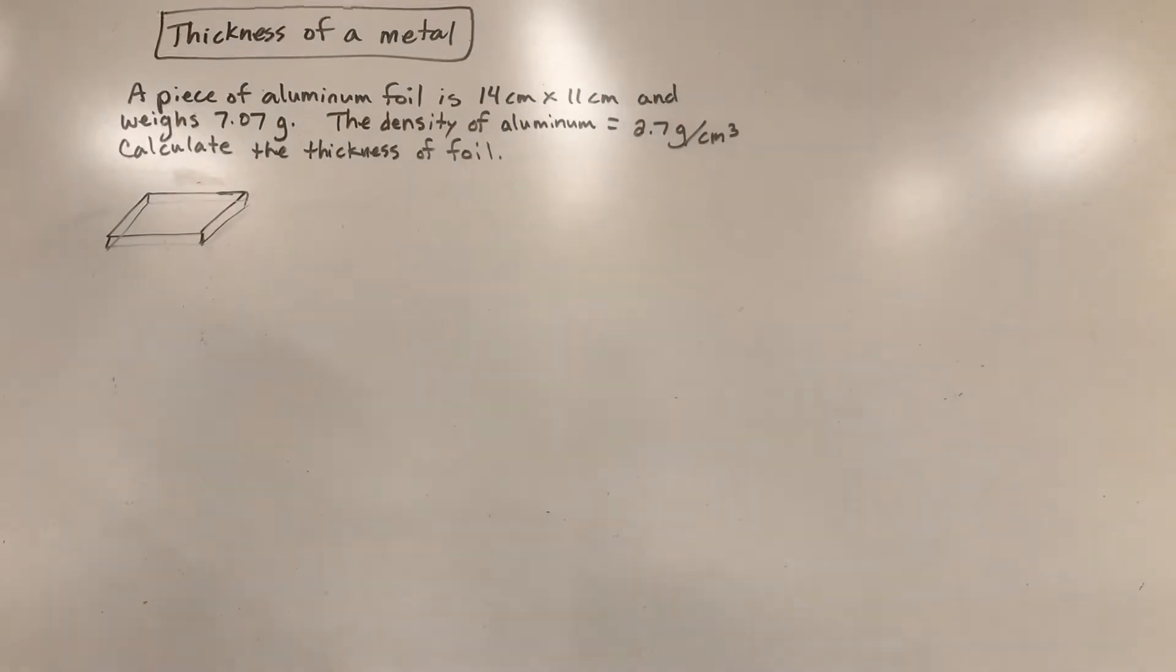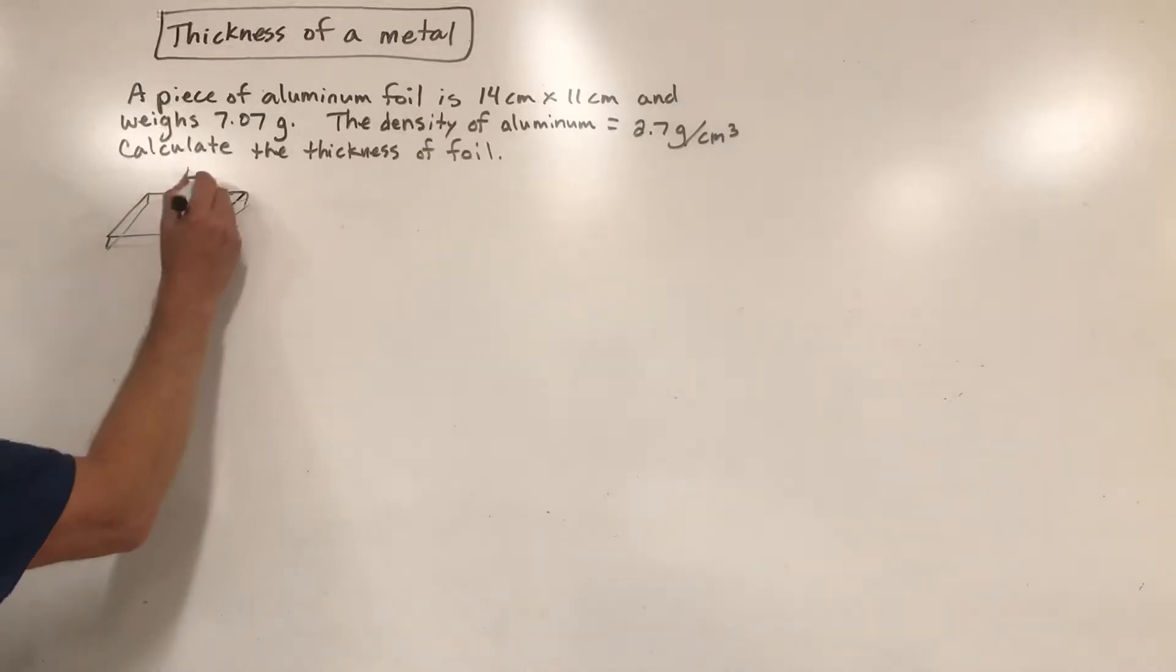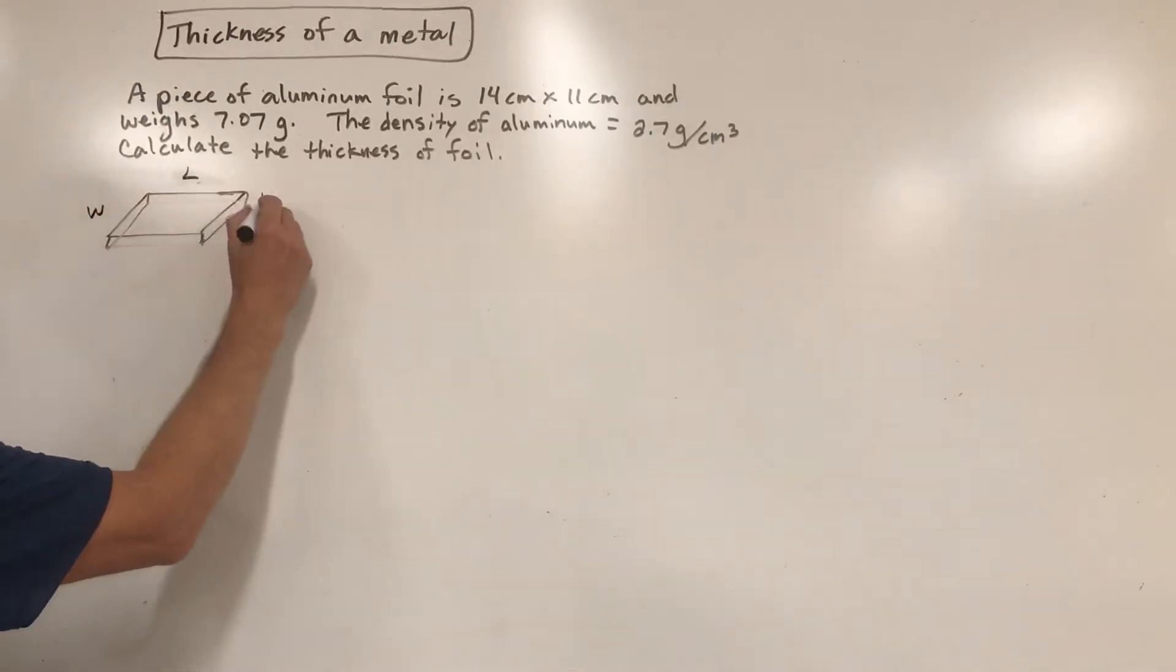The first thing we need to do is think about geometric shapes. I drew this, it's like a little flat box, so essentially a piece of foil is like a rectangular prism. It's like a box, it's just a really, really, really flat box. We need to think of this in geometry terms. We've got a length, a width, and a height.